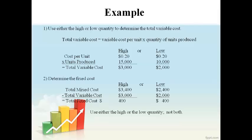The computed total variable cost is subtracted from the total mixed cost to determine the fixed cost. A cost formula can be used to estimate the total mixed cost for any volume of activity. In this case, the total mixed cost is expected to be $400 plus 20 cents for each unit produced.